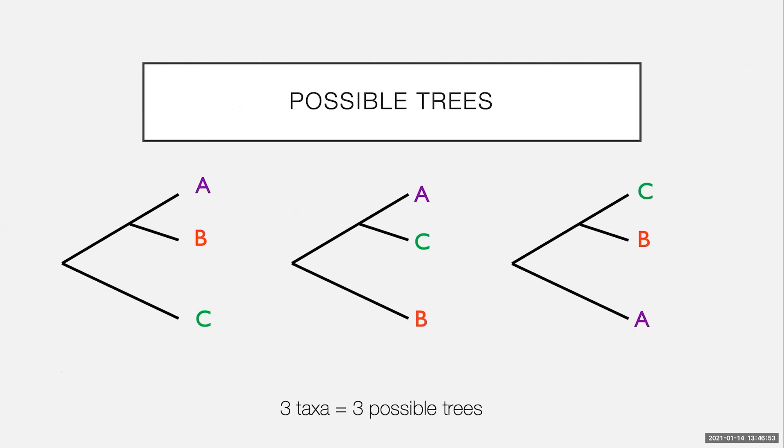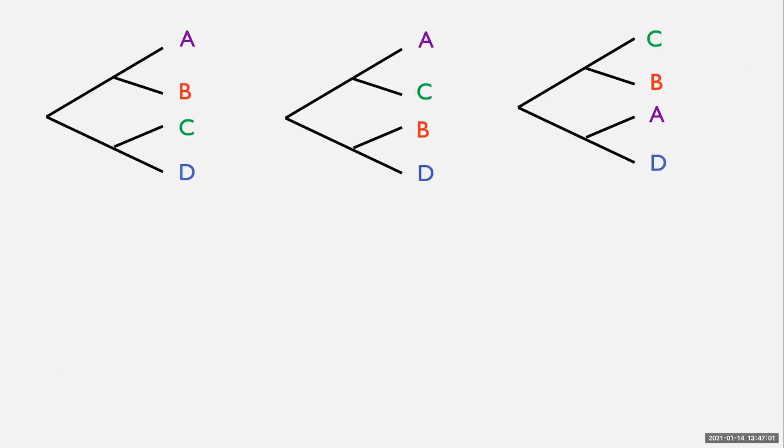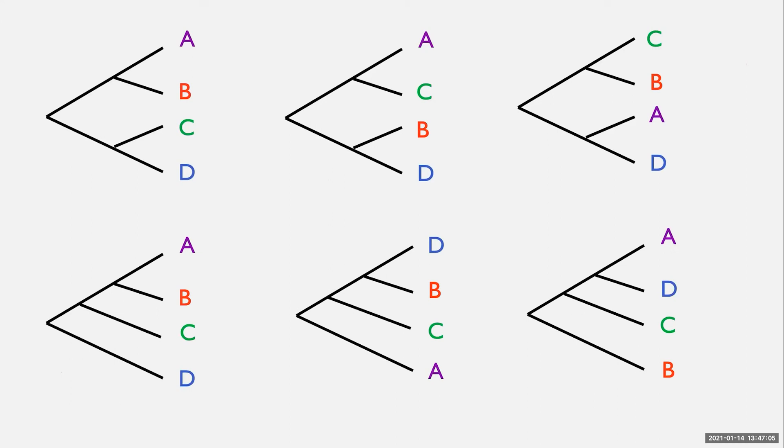So when we only have three taxa, it's actually fine. We can look at these three possible trees and we can ask which one we think is the most likely. When you have four taxa, there's quite a lot of different ways of arranging the sequences. There's actually 15 possible ways of arranging four sequences. So you can see that that is going to escalate really fast.